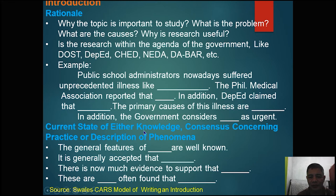Here are example statements which might be used: Number one — 'The general features of [blank] are well known.' Number two — 'It is generally accepted that [blank].' Number three — 'There is now much evidence to support [blank].' Number four — 'These are [blank] often found [blank].'